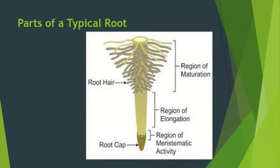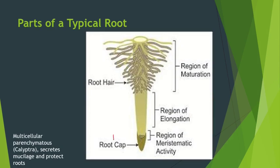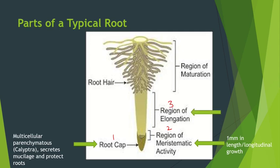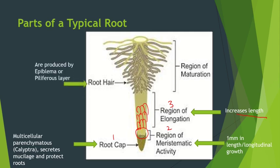What are the parts of a typical root? A typical root consists of a root cap, which is made up of multicellular parenchymatous tissue. The root cap is also called as calyptra; it secretes mucilage and this sticky mucilage protects the root tip when it is penetrating into the soil in search of water and minerals. The second region is the region of meristematic tissue — one millimeter in length — which brings about continuous mitotic divisions, causing longitudinal growth of the root. The third region is the region of elongation, where cells formed in the meristematic region elongate and increase in size, thereby increasing the length of the root.